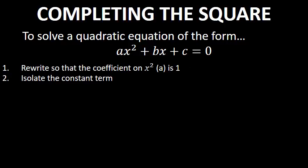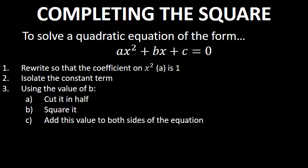The second step is to isolate the constant term — the c in this equation — by subtracting it from both sides. The third step is to use the value of b, the coefficient on x: cut it in half, square it, and then add that value to both sides of the equation.